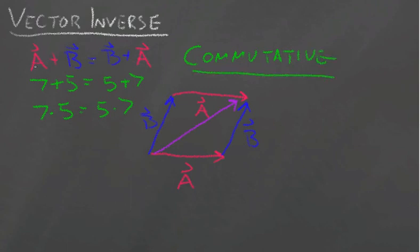Which means it doesn't matter what order I have the numbers or the variables or the vectors in - the answer is still the same. Now this isn't always true. For example, let's say I have 7 ÷ 5 versus 5 ÷ 7 - those two things aren't equal, right?